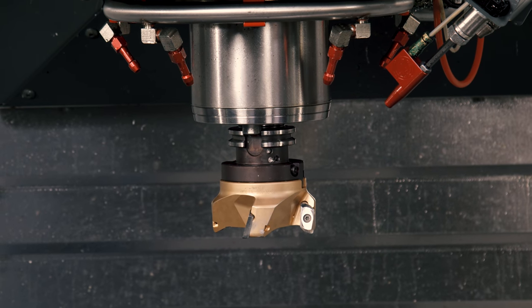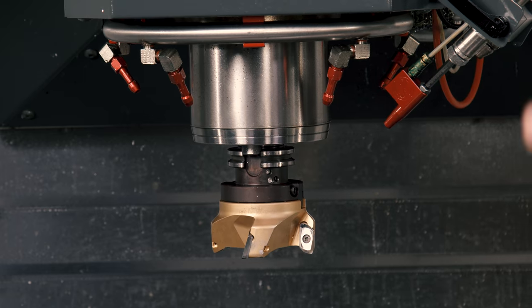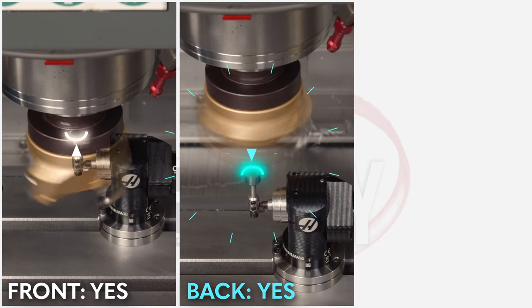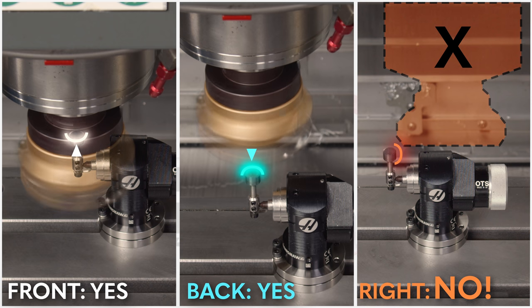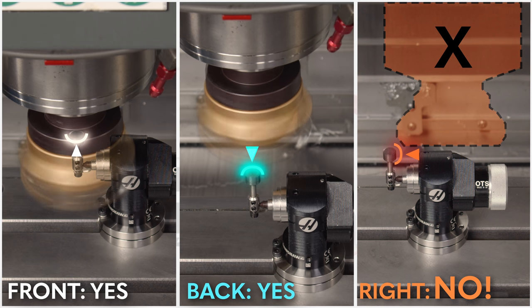Right now, I've got a four inch diameter shoulder mill in the spindle, 100 millimeter diameter. And if I wanted to probe this tool for both length and diameter, it would come down and it would probe from the front and then the back. But what it's not going to do is probe from the right side. It never probes the tool from the right side if we calibrated the probe properly.